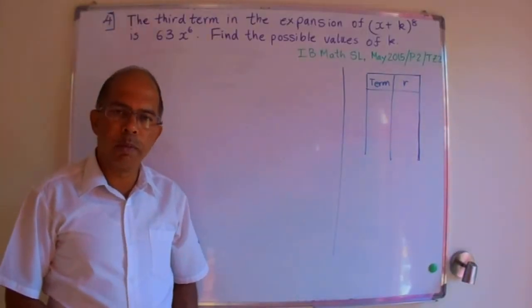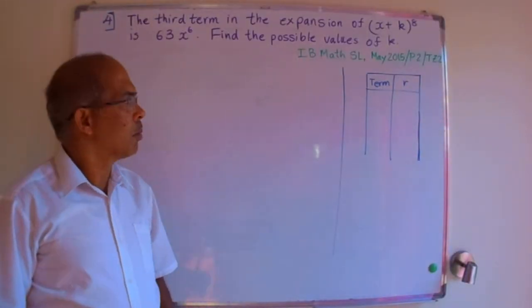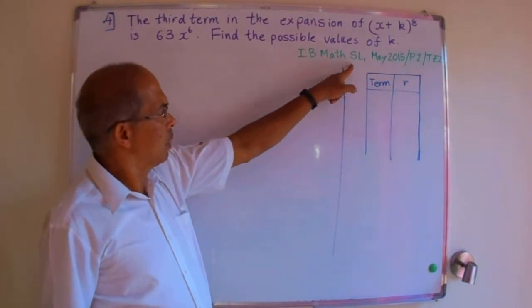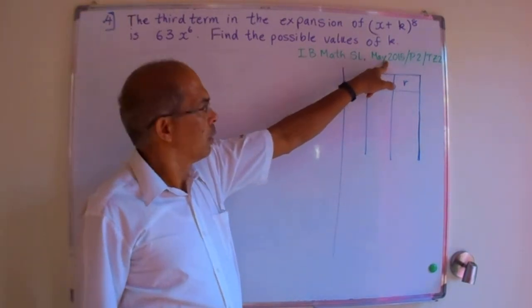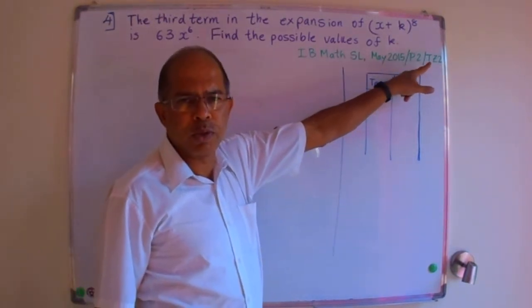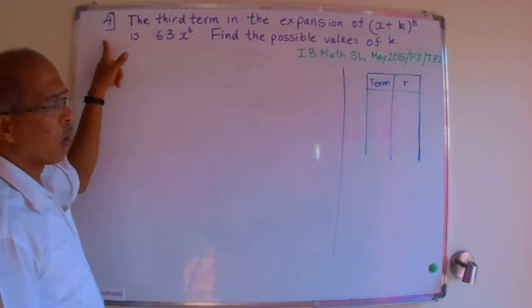We will look at a problem on binomial expansion from the IB Math SL paper, May 2015. It's paper 2 and it's from time zone 2. This is question number 4.